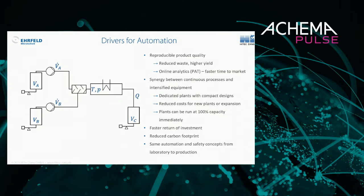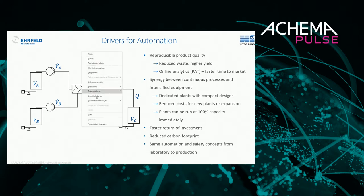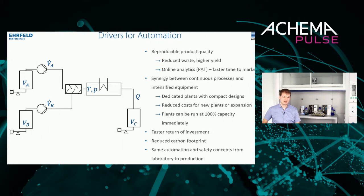Let's switch to the next slide. We're going to talk about automation together with flow chemistry. What you can see here is a typical setup for a flow chemistry experiment. In a continuous reactor you have to control the flow rates of incoming materials, and you might be interested in the volume of materials still available. Typically you have a mixing element followed by the actual reactor where you want to control temperature and pressure.